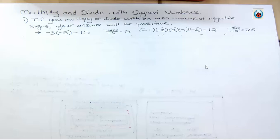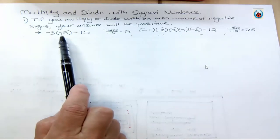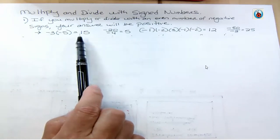Negative 3 times negative 5. You see how there's two signs, two negative signs? That's an even number. Two is even. Since there's an even number, then we get a positive answer, 15.